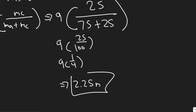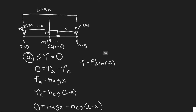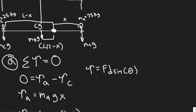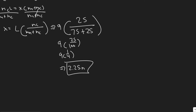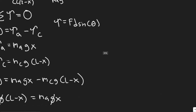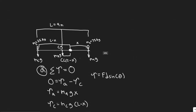So 2.25 meters is the answer to part A. This is the distance from the adult to the pivot point, where the torque is equal to zero and the board is balanced.